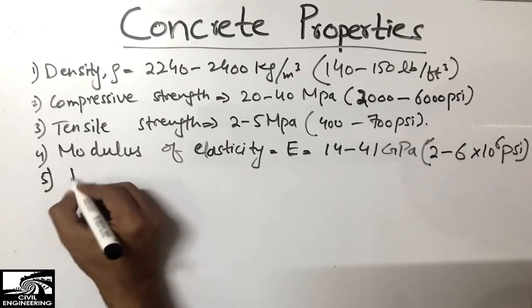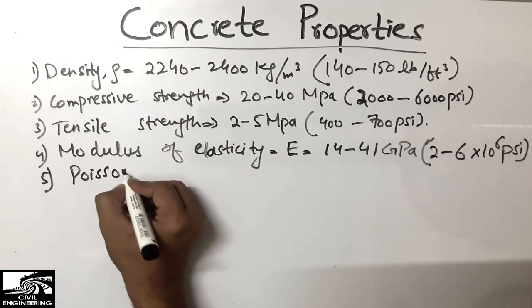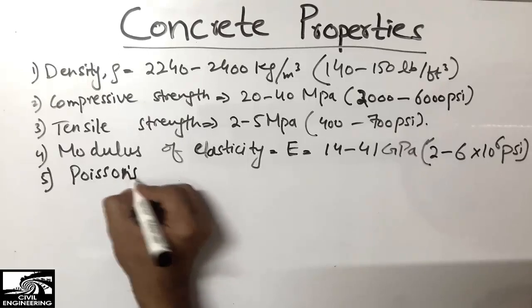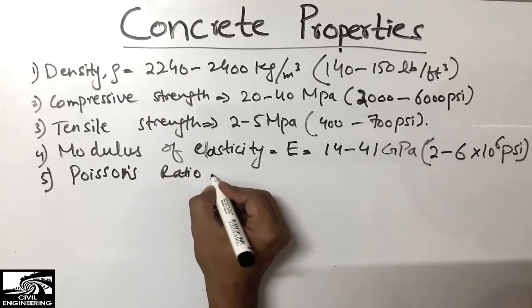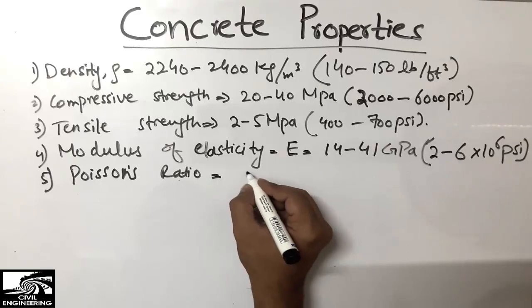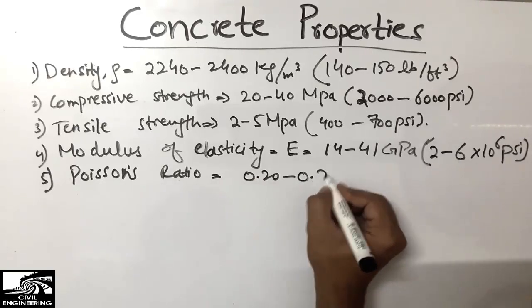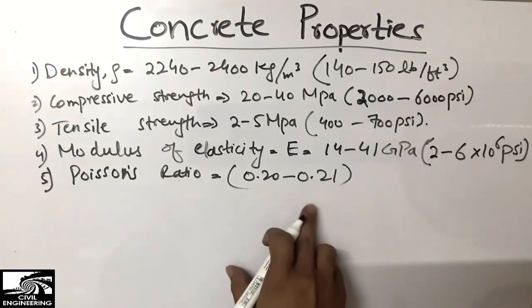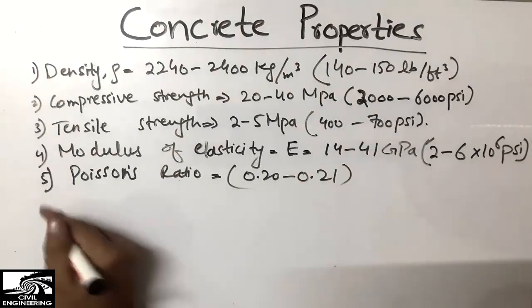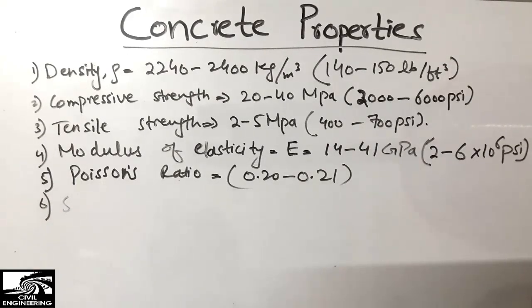The fifth property is the Poisson's ratio of concrete, which ranges from 0.1 to 0.2.